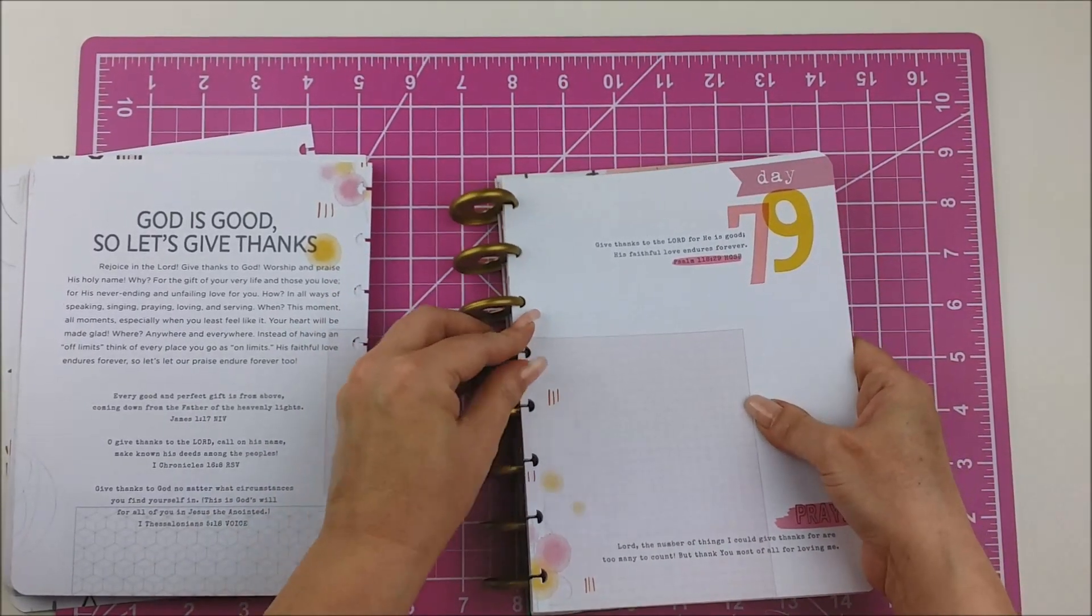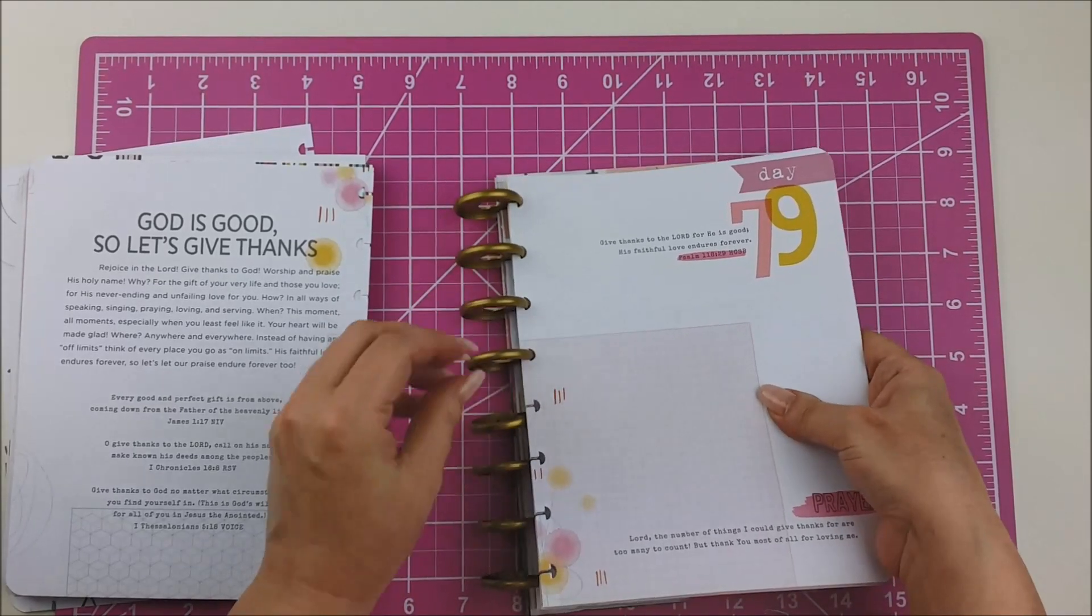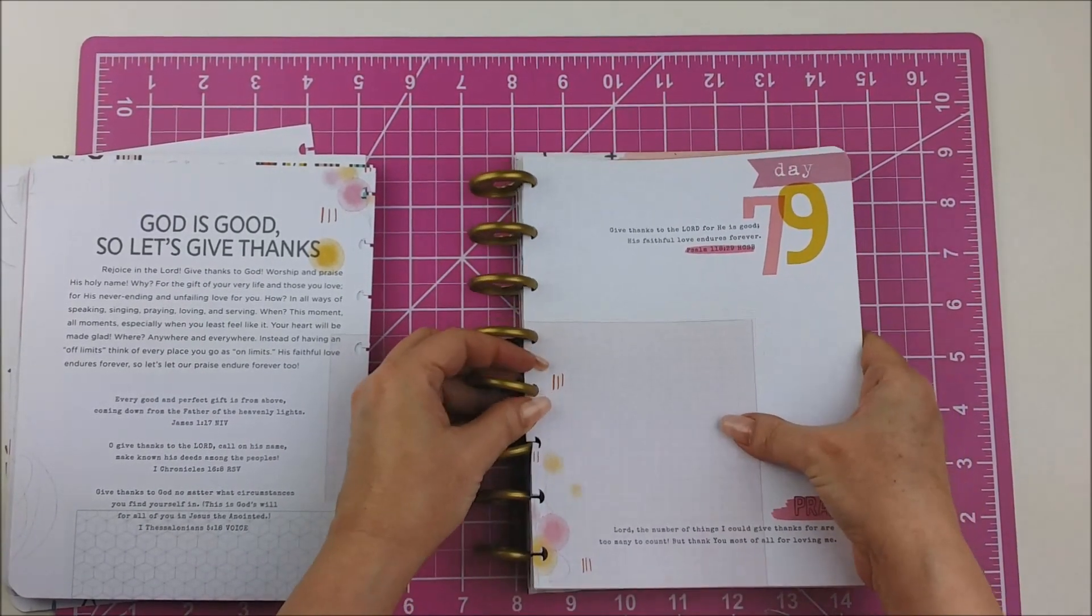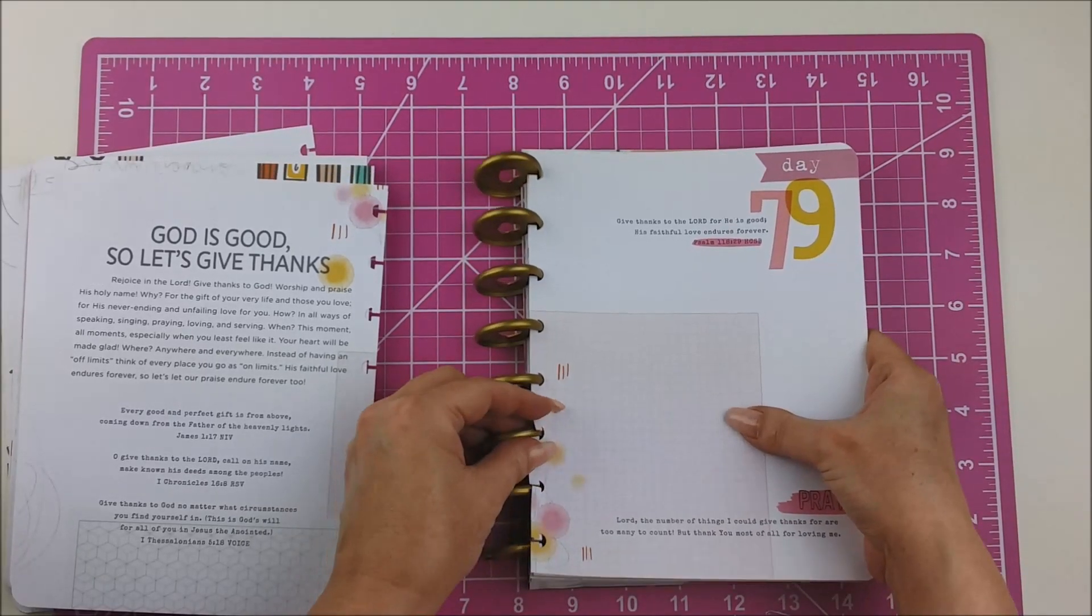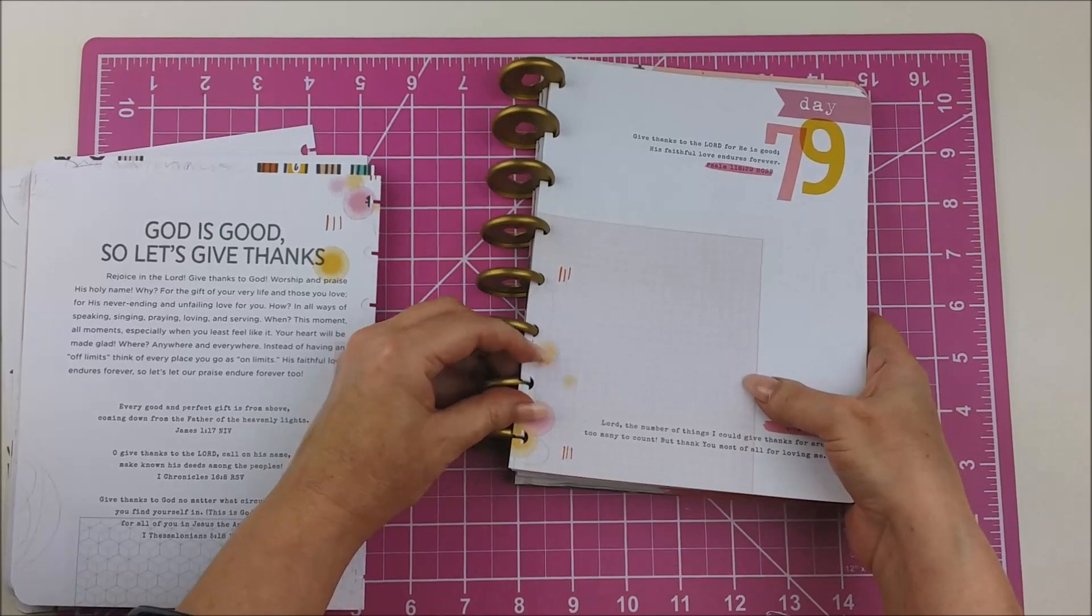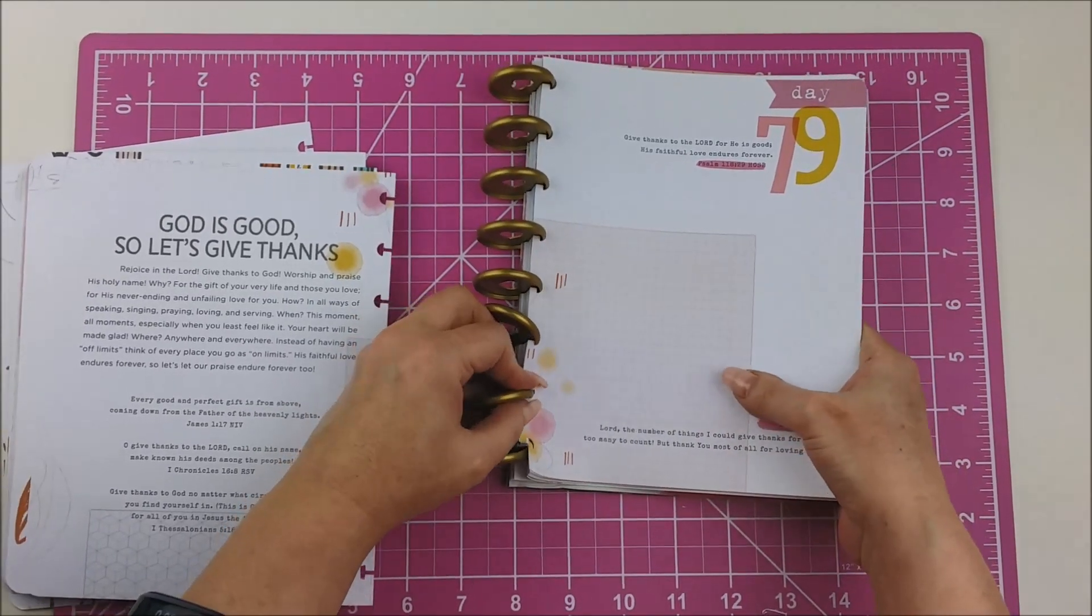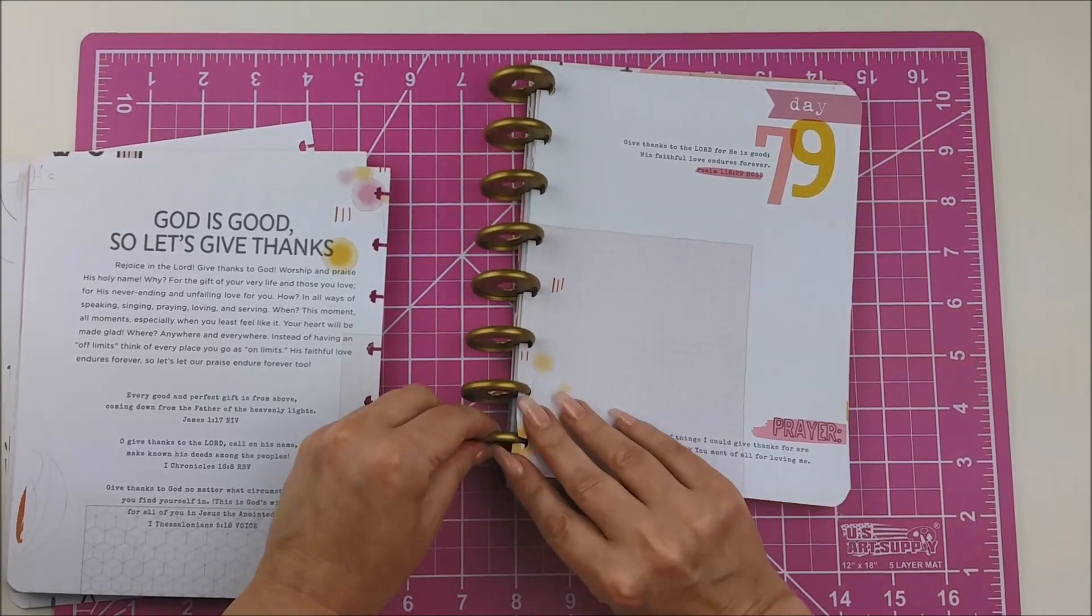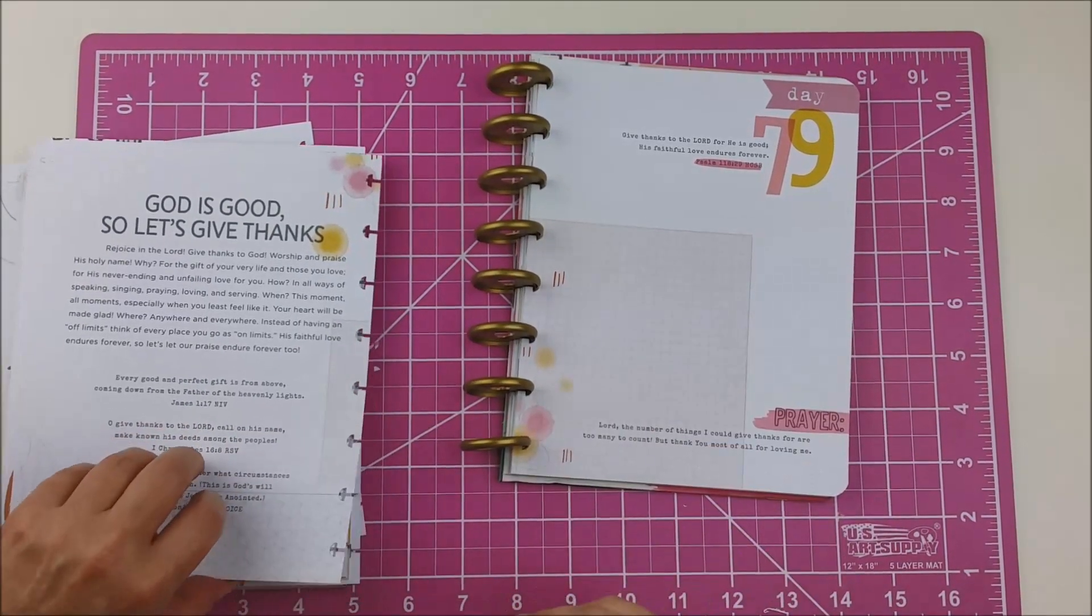A lot of people use the We Are Memory Keepers version. I think there's a Heidi Swapp cinch if you've heard of that. So there's different ways that you can homemade at home, do it yourself, bind. And if you don't want to do all of this you can take it to Staples or Kinko's or one of those places. Have them cut and bind it. But there's so many options for doing this stuff at home that that's the way I do it. And I just wanted to share that with you.